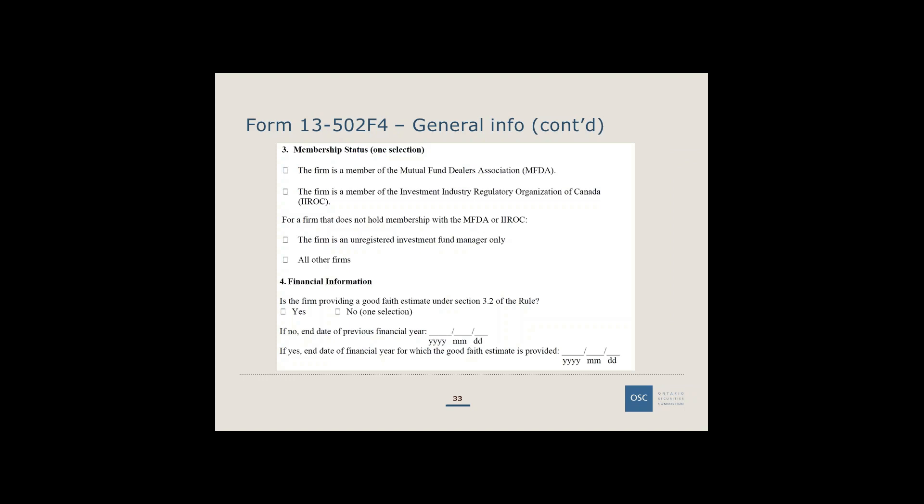For financial information, this depends on whether your firm has a late year end. Since the calculation is due December 1st, firms with October, November, or December year ends may not have audited figures yet and must provide a good faith estimate under section 3.2 of the rule — selecting 'yes' on the form. The year has been hard-coded as 2015 on the online form, so you only need to enter the month and day of your financial year end. Firms with earlier year ends — January through approximately September — with audited financials available would select 'no' to the estimate question.